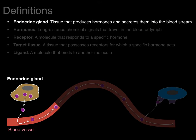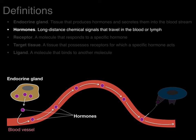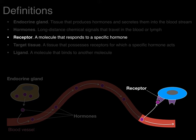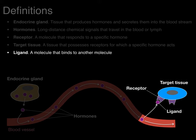A couple of definitions: endocrine glands are tissues that produce hormones and secrete those hormones into the bloodstream. A hormone is a long-distance chemical signal that travels in the blood or lymph. A receptor is a molecule that responds to a specific hormone, and the target tissue is a tissue that possesses receptors for which a specific hormone acts. A ligand is a molecule that binds another molecule — so ligand and hormone, in this context, are synonymous.